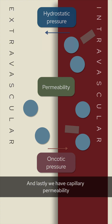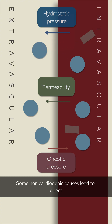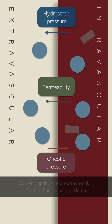Lastly, we have capillary permeability, which takes into account the leakiness of the vessel wall. Some non-cardiogenic causes lead to direct damage of the alveoli and increased vessel permeability. So anything that affects these three different factors can end up with excess extravascular fluid and pulmonary edema.